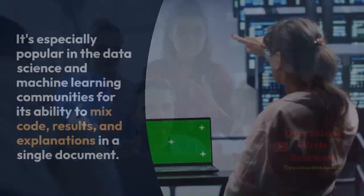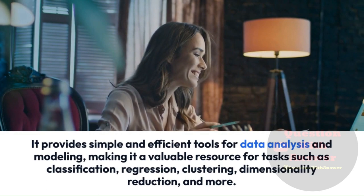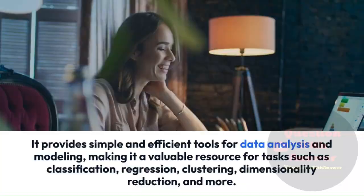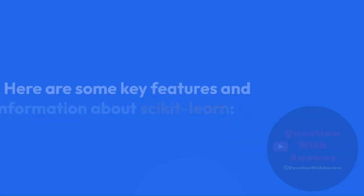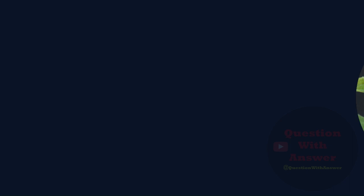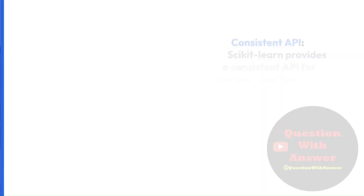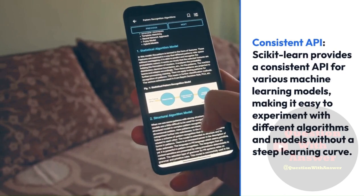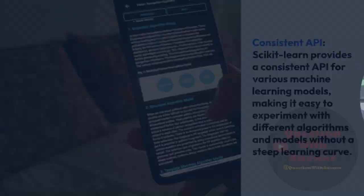4. Scikit-Learn. Scikit-Learn is a popular open-source machine learning library for Python. It provides simple and efficient tools for data analysis and modeling, making it valuable for tasks such as classification, regression, clustering, dimensionality reduction, and more. Scikit-Learn is built on top of other Python libraries like NumPy and SciPy, and is widely used in data science and machine learning. Machine learning algorithms: Scikit-Learn offers a wide range of machine learning algorithms, including supervised learning methods like classification and regression, as well as unsupervised learning methods like clustering and dimensionality reduction. Consistent API: Scikit-Learn provides a consistent API for various machine learning models, making it easy to experiment with different algorithms without a steep learning curve.